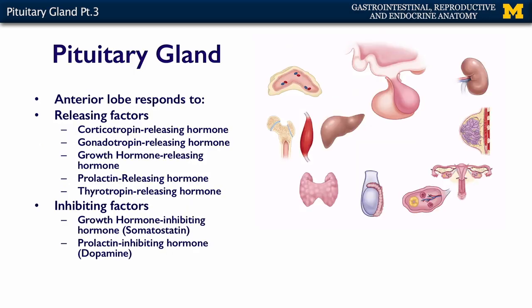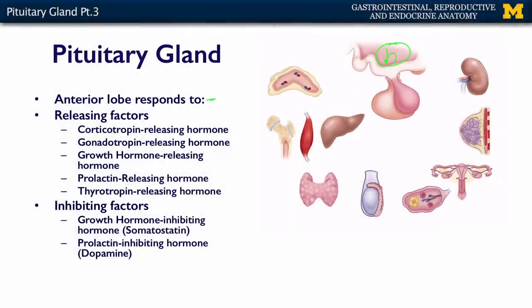The anterior lobe of the pituitary responds to factors created in the hypothalamus, and these include corticotropin-releasing hormone, gonadotropin-releasing hormone, growth hormone-releasing hormone, prolactin-releasing hormone, and thyrotropin-releasing hormone. They're wordy, but the words tell you what they do. For example, corticotropin-releasing hormone from the hypothalamus acts on the anterior pituitary, which then secretes adrenocorticotropic hormone. I'll talk more in detail about those tropic hormones when I discuss the individual endocrine organs.